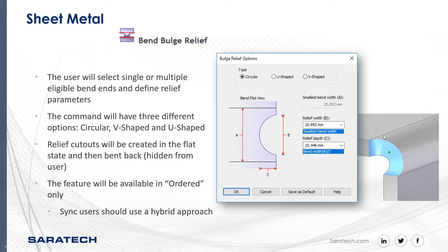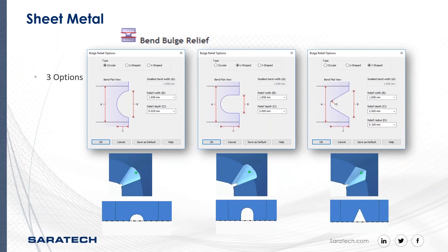You can see the options here — you can choose circular, U-shaped, or V-shaped relief. The next screen literally shows what the three options look like. Here is the circular option with a nice circular cutout, the U-shape where it looks like a U cut into the sheet metal part, and the V-shape with a nice V there at the bottom.